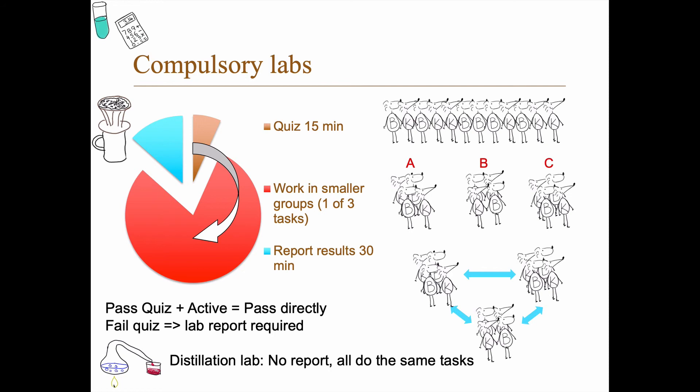So the compulsory labs, we have two. The first lab starts with a 15-minute quiz on the hour. So if it says that the lab starts 8, it starts 8 sharp. And the first 15 minutes are dedicated to a quiz. And then you are divided into smaller groups in the membrane filtration lab. And you do one of three tasks in the lab description. And then at the end of the lab session, you report the results to the other students. So everyone gets to know about all the three tasks. If you pass the quiz and are active during the lab, you pass directly. So you do a good presentation and you do a reasonable work during the lab. If you fail the quiz, you are required to hand in a lab report maximum a week after the lab.